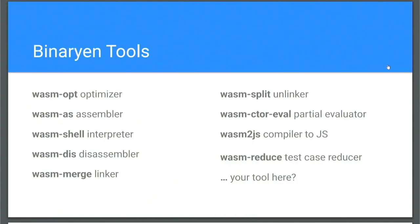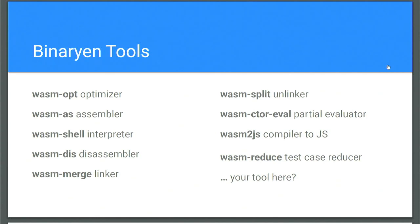The Binaryen tools include WASMopt — that's the optimizer. We have an assembler, an interpreter, a disassembler. We have a linker, so you can take two WebAssembly modules and just smash them together into one bigger WebAssembly module. We have WASM split, which does the opposite — you can take one WebAssembly module and split it up into multiple WebAssembly modules. That's pretty cool because we can use that for lazy code loading. So if I have a giant multi-megabyte WASM binary — maybe it's Photoshop or Sheets or some giant application — I can split it up into multiple modules and have them dynamically loaded at runtime as the functions are needed.